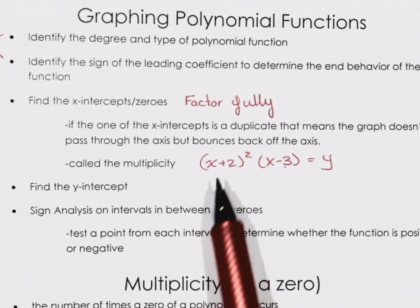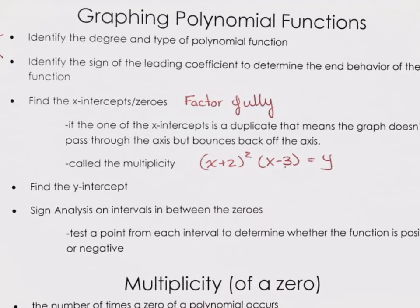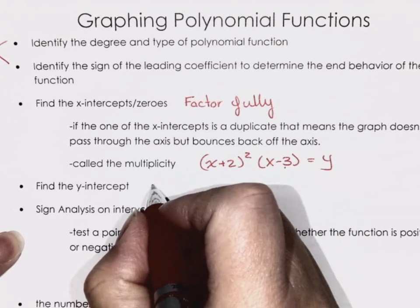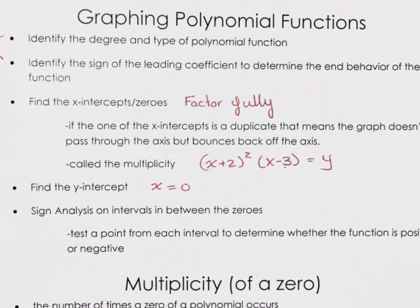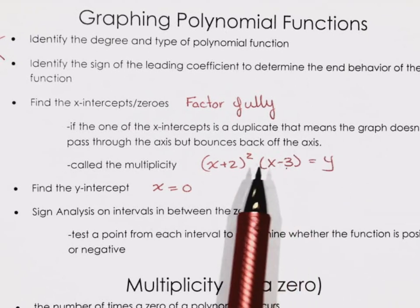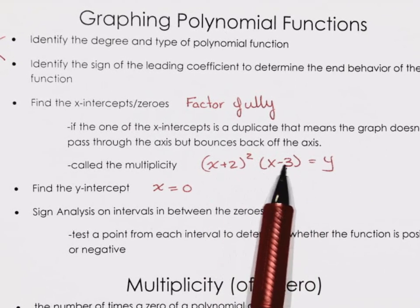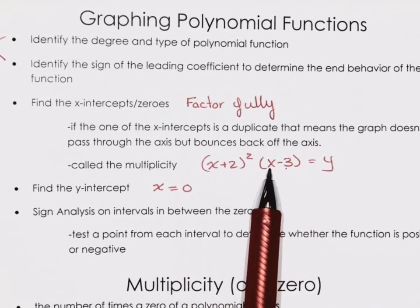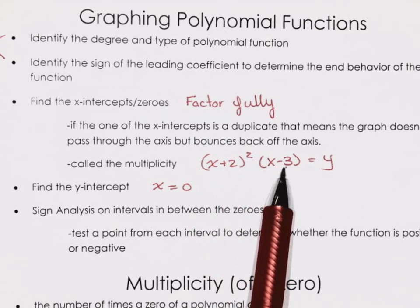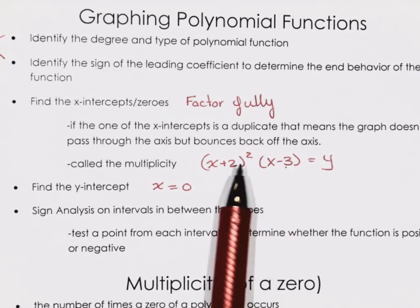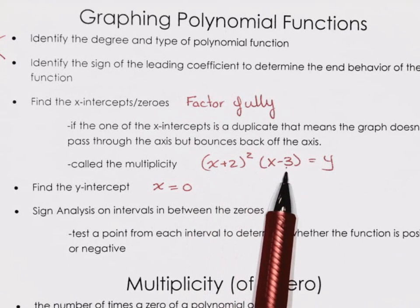Next, you're going to calculate the y-intercept — super easy. We know when we're finding the y-intercept that x is equal to zero. But here's the thing: people say 'oh the y-intercept is zero' if it's given in factored form — it's not. You actually have to substitute it in.